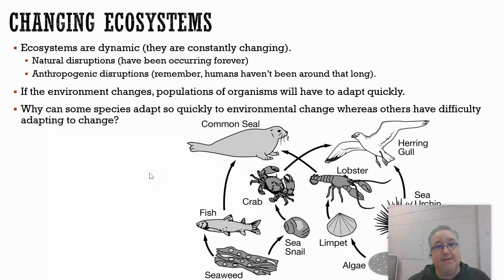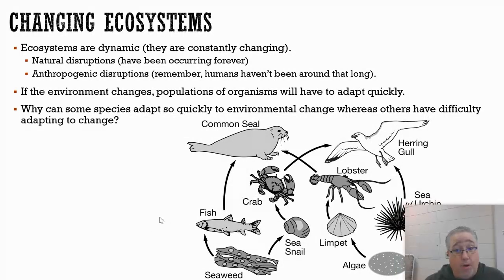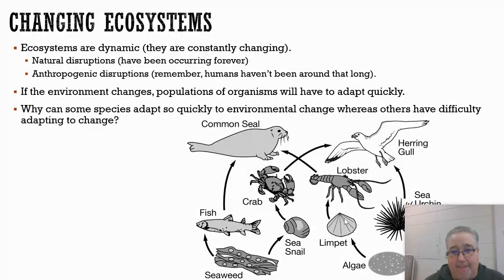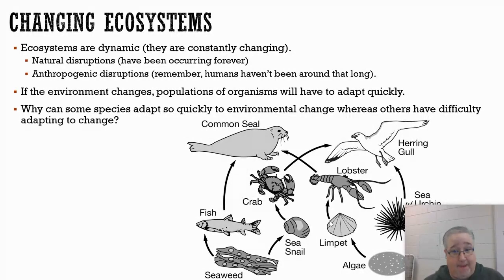There's a question here: why can some species adapt so quickly to environmental change, whereas others have difficulty adapting? That really just depends on the organism. For example, looking at this ocean food web with crabs, fish, snails, and seals — if there's some type of environmental change like global warming or sea ice melting, some of these organisms might be well adapted to that change whereas others may not be. Think about some things we talked about in the previous unit that might give you some ideas for why that is.